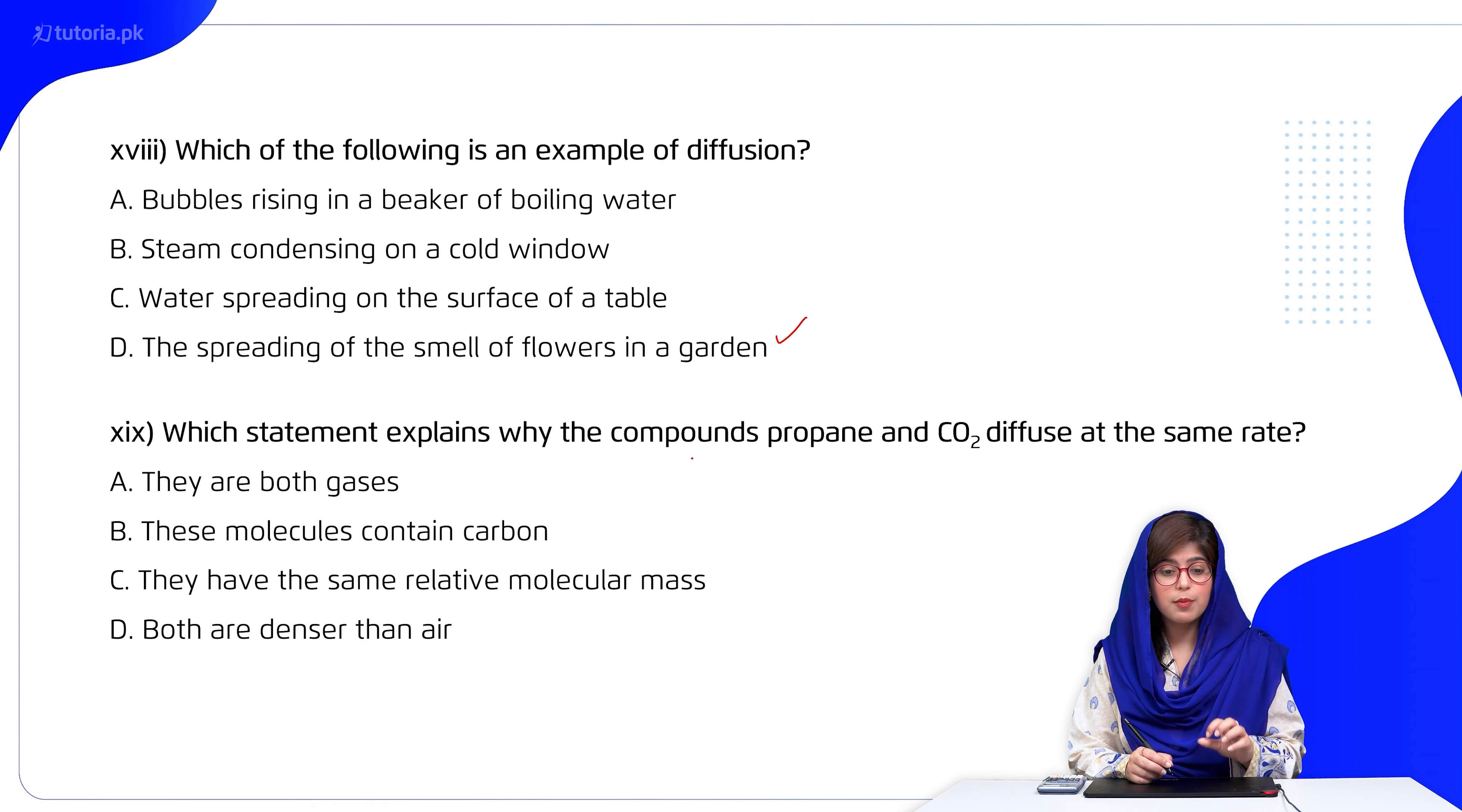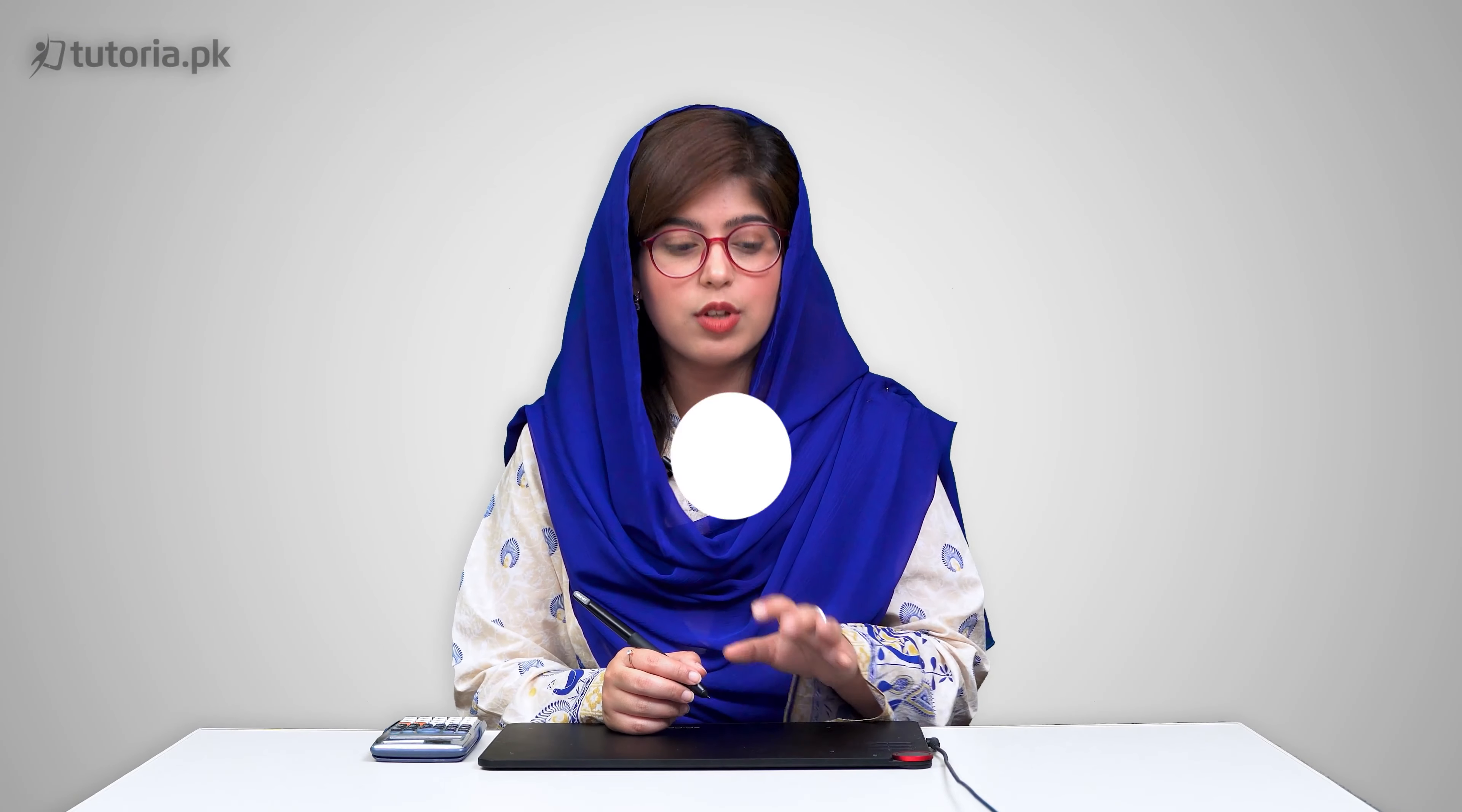Then next students, which statement explains why the compounds propane and carbon dioxide diffuse at the same rate? A they are both gases, B both contain carbon, C they have the same relative molecular mass, D both are denser than air. So students, if you compare their molecular masses, they are the same. That's why they diffuse at the same rate.